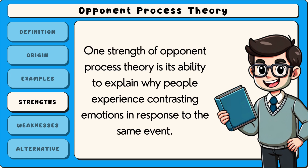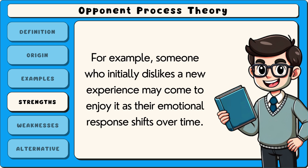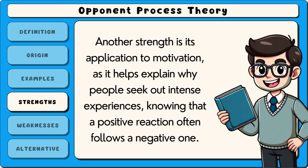One strength of opponent process theory is its ability to explain why people experience contrasting emotions in response to the same event. For example, someone who initially dislikes a new experience may come to enjoy it as their emotional response shifts over time. Another strength is its application to motivation, as it helps explain why people seek out intense experiences.